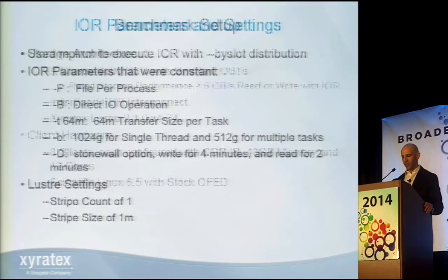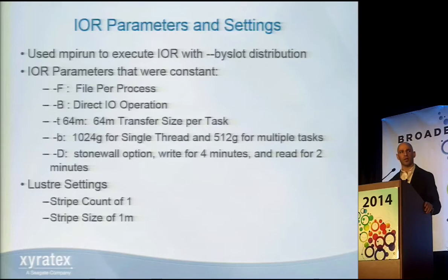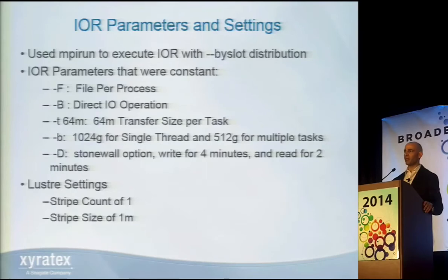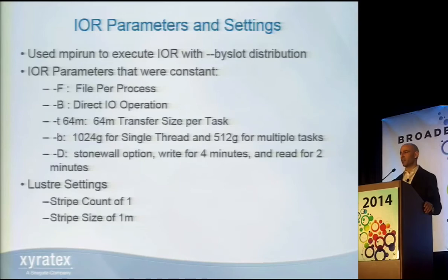I used MPI run to execute IOR across all eight clients with the by-slot distribution. At a minimum I started with four slots per client, scaling up by four tasks per client. The parameters I used were file per process, standardized on direct I/O instead of buffered I/O, and a transfer size of 64 megabytes because the RAID OSTs are trying to maximize performance.